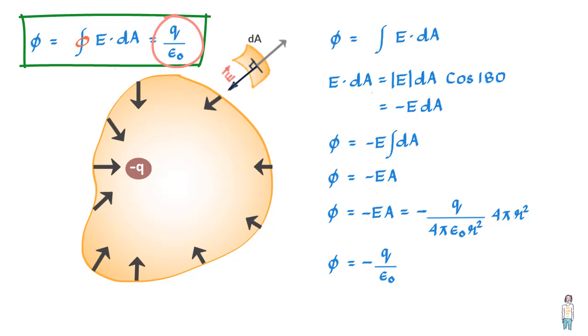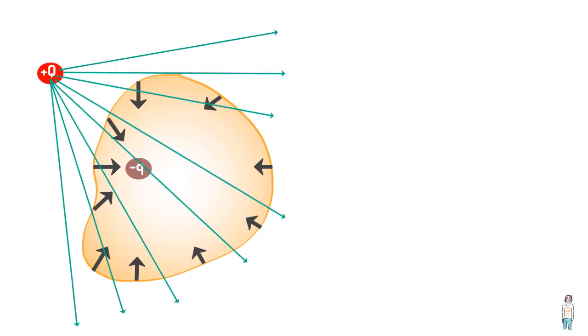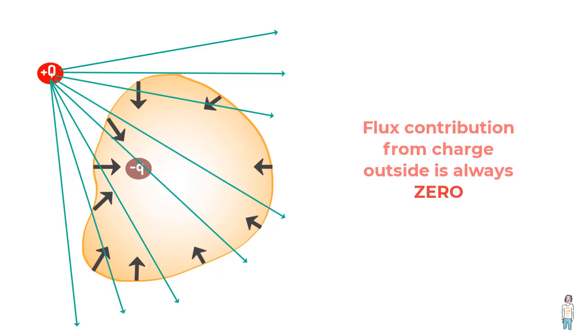Another thing you may like to note is that the E value at any point on the surface could be a contribution from a charge inside the surface as well as charge outside the surface. But you've got to remember that flux contribution from any charge outside the surface is always zero as far as the total enclosed surface is concerned.